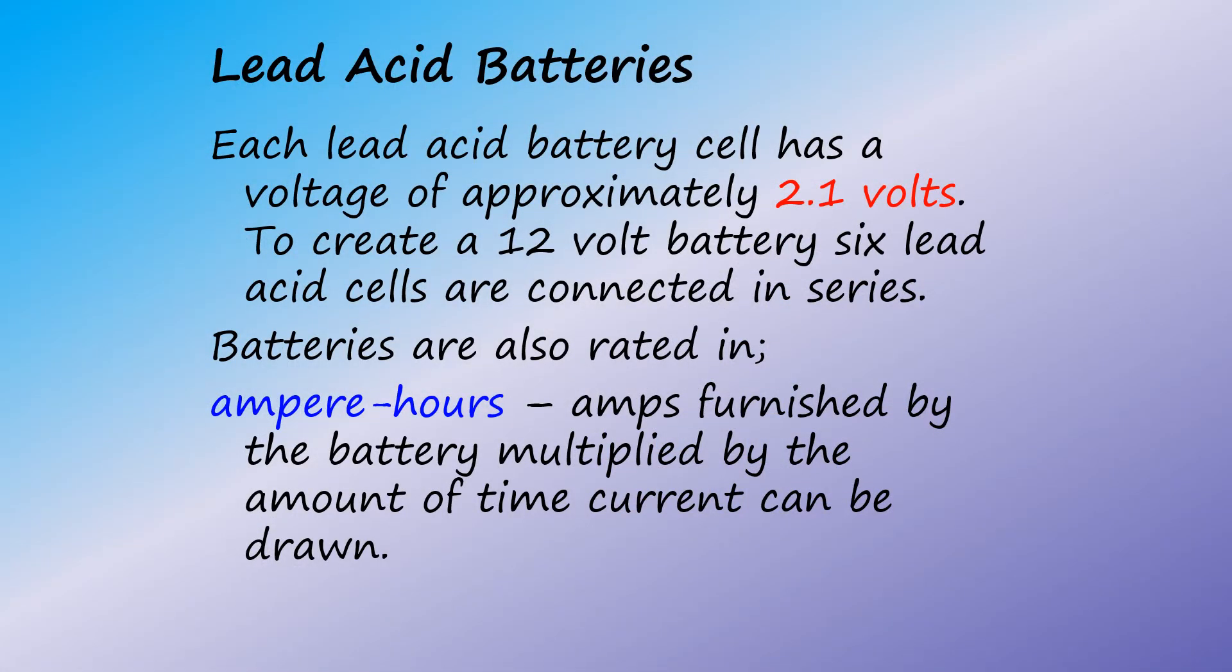Each lead acid battery cell has a voltage of approximately 2.1 volts. To create a 12 volt battery, six lead acid cells are connected in series. Batteries are also rated in amp hours: amps furnished by the battery multiplied by the amount of time current can be drawn.